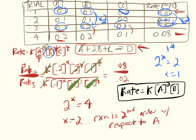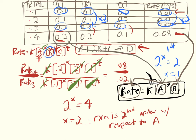Problems will also ask you to calculate K. To do that, take the concentration of A, B, and the rate for any given trial — it doesn't matter which one. For example, using trial 4: plug 0.08 in for rate, the concentration of A goes in for [A]², and B goes in for [B]. Then use algebra to solve for K, check your units, and you have the rate constant.